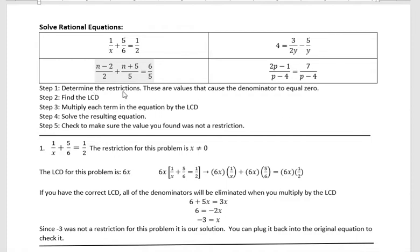First step, we're going to determine the restrictions. These are the values that cause the denominator to equal zero. Then we're going to find the LCD, multiply each term in the equation by the LCD, and solve the resulting equation. And then we're going to check to make sure what we found was not a restriction.